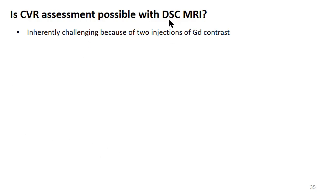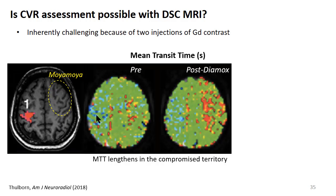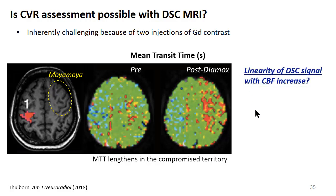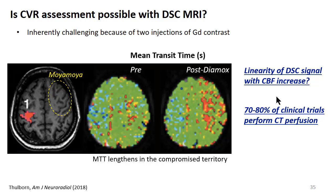Doing this with DSC is harder because you would require two injections of gadolinium contrast. A paper out this year performed two DSC MRI injections, looking at a change in mean transit time pre- and post-Diamox rather than an augmentation in CBF. But you might question whether the susceptibility effect is linear with CBF increase. And if you want to do DSC for CVR, why not do CT perfusion when most clinical trials already use CT perfusion? There are a lot of challenges — the best way to measure CVR remains an open discussion.